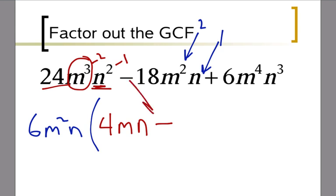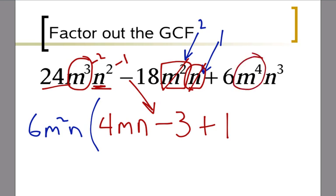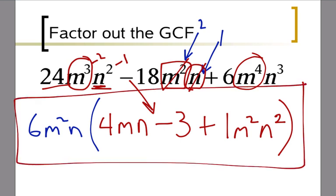The negative sign comes down: minus 18 ÷ 6 is 3; m squared cancels and n cancels, leaving negative 3. Plus 6 ÷ 6 is 1; m to the fourth divided by m squared leaves m squared; n cubed divided by n leaves n squared. So the final term is m squared n squared. The correct answer is 6m²n times (4mn minus 3 plus m²n²). As you can see, sometimes you have to think through two variables rather than just one.